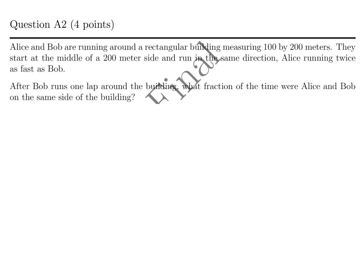Alice and Bob are running around a rectangular building measuring 100 by 200. They start at the middle of the 200 meter side and run in the same direction. Alice running twice as fast as Bob. After Bob runs one lap around the building, what fraction of time were Alice and Bob on the same side of the building? Well, let's make a diagram. They started here. So this is the 200 meter side and this is the 100 meter side. They both start there, which is the middle of the 200 meter side. So who's going faster here? Alice is running twice as fast. So Alice runs 2 laps since Bob runs 1 lap.